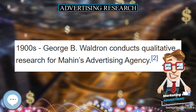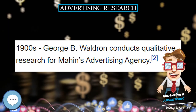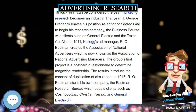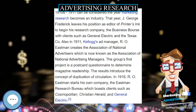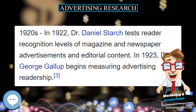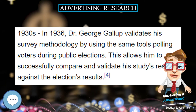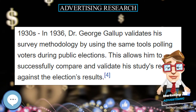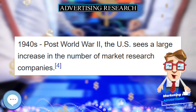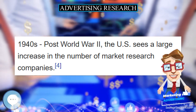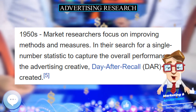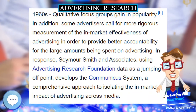The history of advertising research includes several highlighted events. In 1879, N.W.A. conducts custom research in an attempt to win the advertising business of Nichols Shepard Company, a manufacturer of agricultural machinery. In 1895, Harlow Gale of the University of Minnesota mails questionnaires to gather opinions about advertising from the public. In the 1900s, George B. Waldron conducts qualitative research for Maheen's advertising agency.